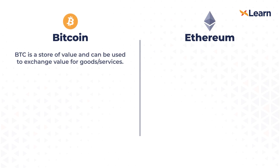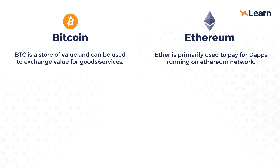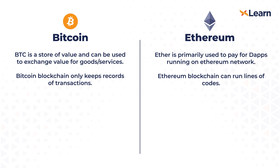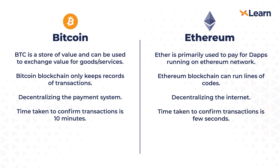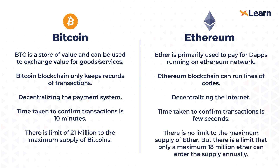Now let's see how Ethereum is different from Bitcoin. Bitcoin is a store of value and can be used to exchange value for goods or services, whereas Ethereum is primarily used to pay for dApps running on the Ethereum network. Bitcoin blockchain only keeps records of transactions, whereas Ethereum blockchain can run lines of code. In simple words, Bitcoin is decentralizing the payment system whereas Ethereum is decentralizing the internet. Transaction confirmation in Bitcoin takes 10 minutes, whereas it's just a few seconds in Ethereum. Bitcoin has a total supply of 21 million, but Ether has no fixed max supply — however, only a maximum of 18 million Ether can enter its supply annually.